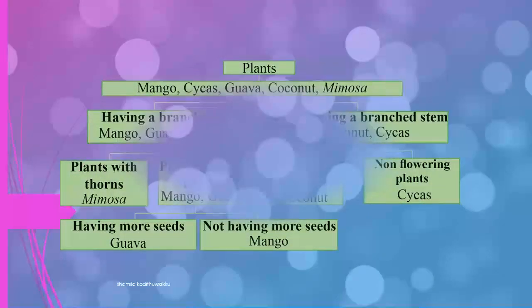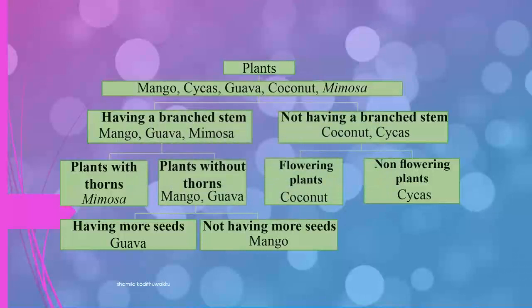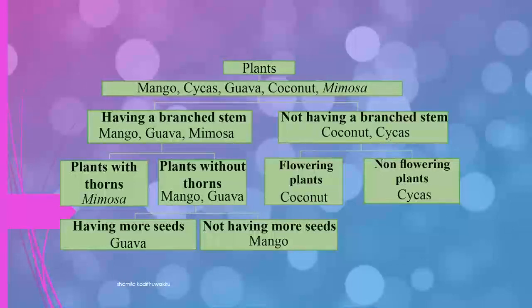Now we discuss the dichotomous key using plants. There are five plants: mango, guava, coconut, mimosa, and seekers. These five plants can be divided into two groups: those having a branch stem — mango, guava, and mimosa — and those not having a branch stem — coconut and seekers.